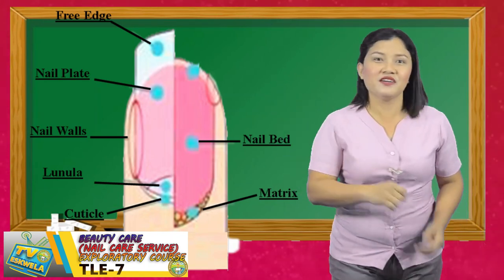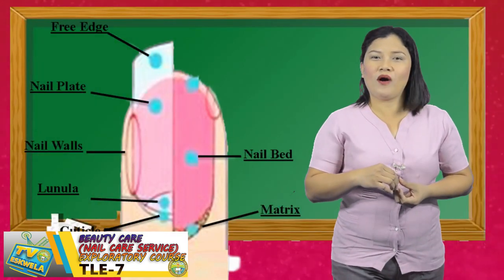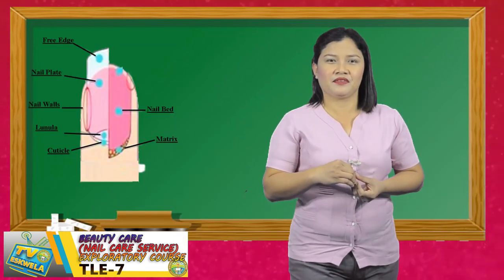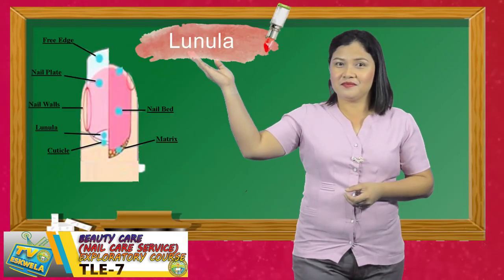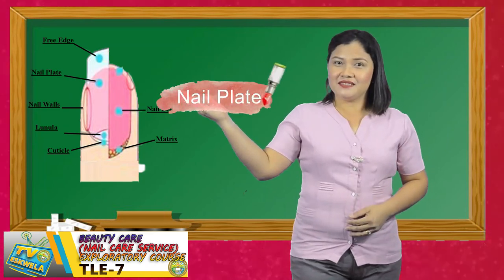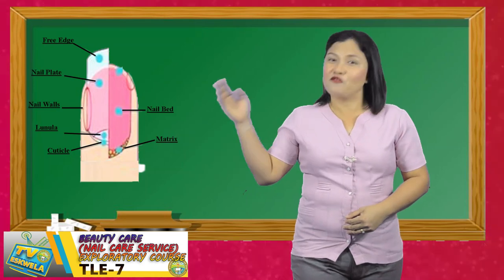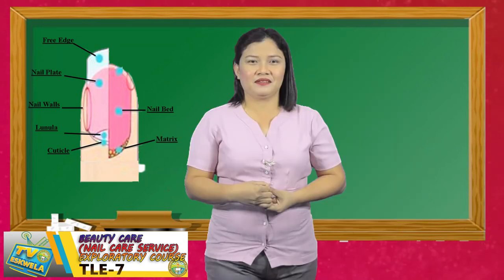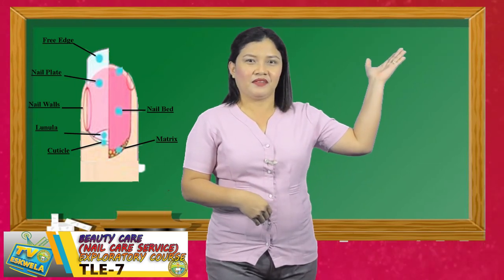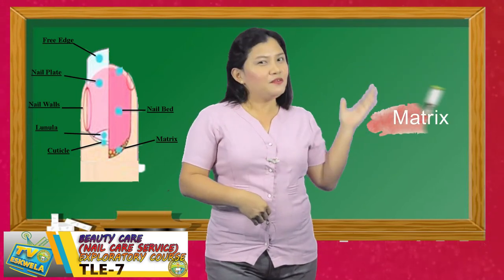Let us take a look once again at the seven parts of the nail: lunula, nail plate, cuticle, free edge, and we have nail bed, nail walls, and matrix.